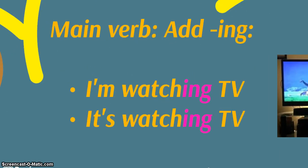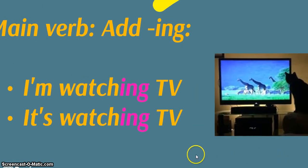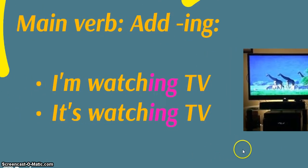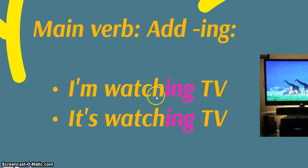And what happens to the main verb? For the main verb we add ing so I'm watching TV, it's watching TV. The cat is watching TV. But can you see? So we have the verb watch and we add ing. Very simple, right?